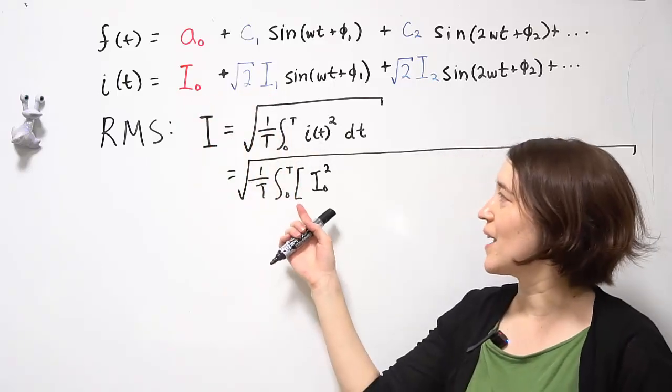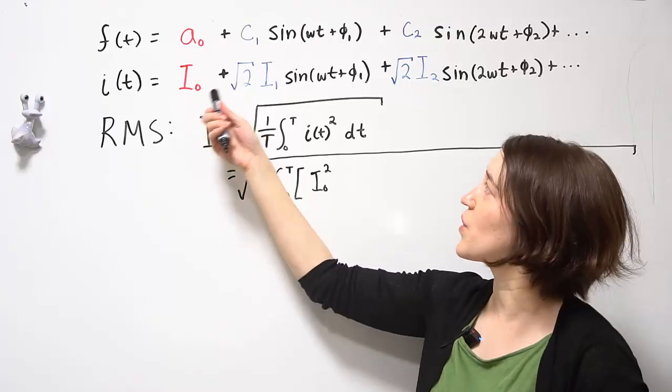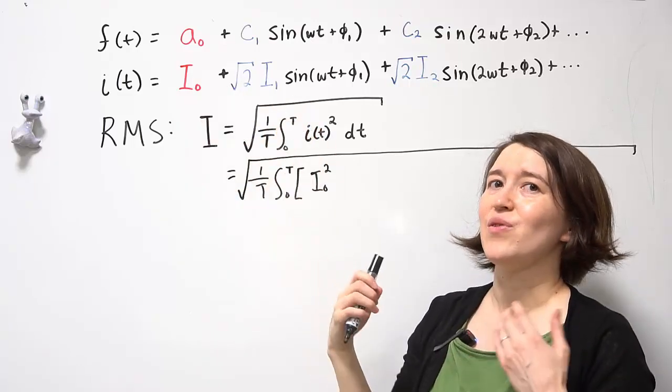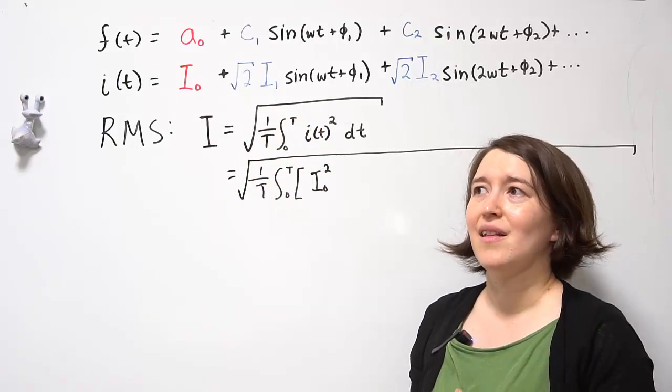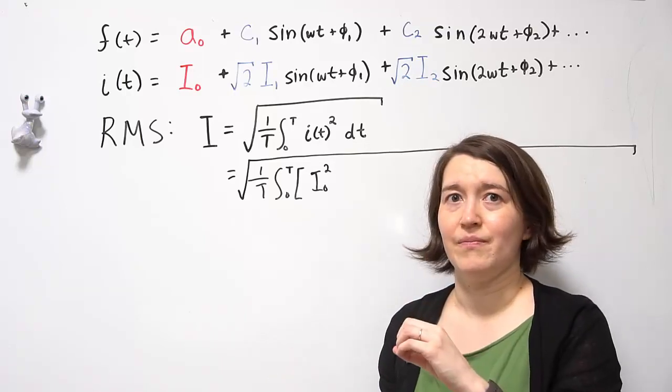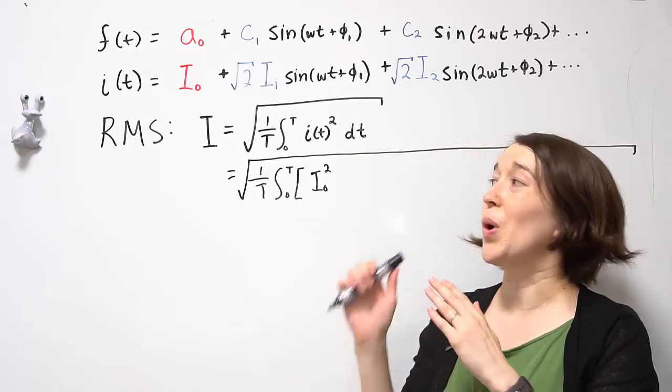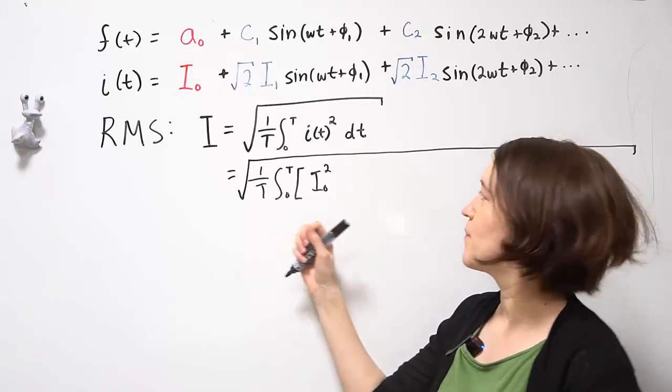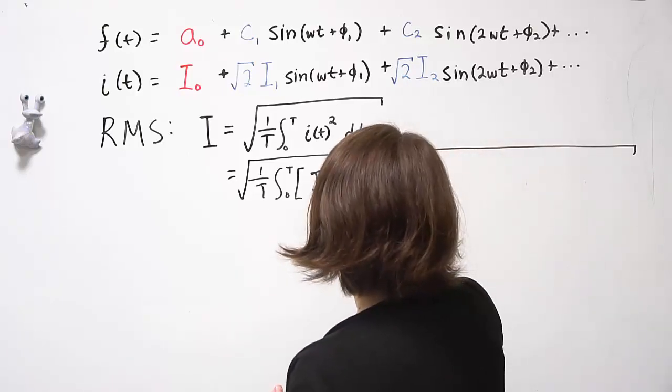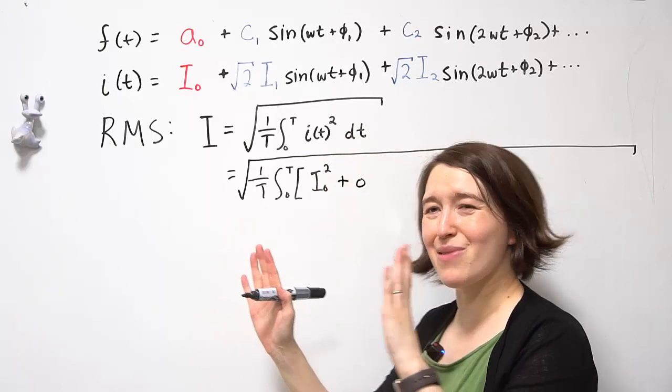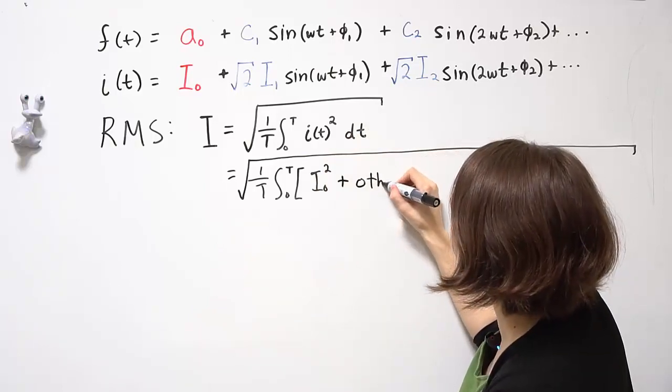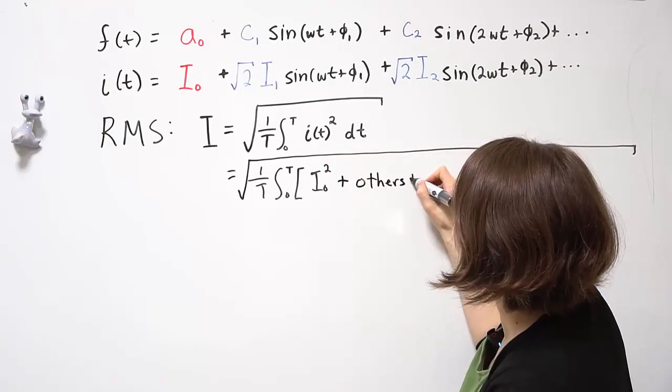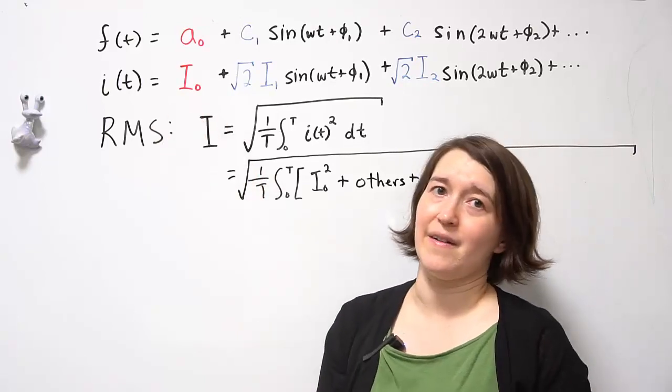But remember that we're taking an average. Whenever you multiply by a sine and you take an average of a sine, the average of a sine is always zero. So all of those terms will go to zero once we take the average. So instead of writing that out, I'm going to do non-mathematical terms here. We're just going to call this others. So these are the other terms multiplied by I0.